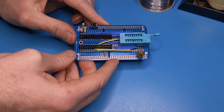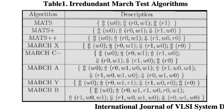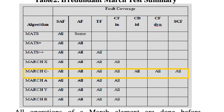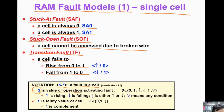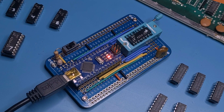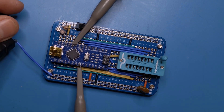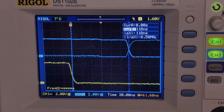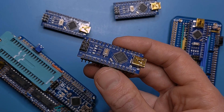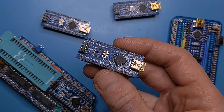Here's what I came up with. It uses the March C- algorithm, a product of academic research designed to catch real-world DRAM faults. It's efficient, taking just one second to test a 64K RAM. It has a read measurement mode to verify that row access time is within spec. And the best part is, all you need is that spare Arduino board that you've got laying around.